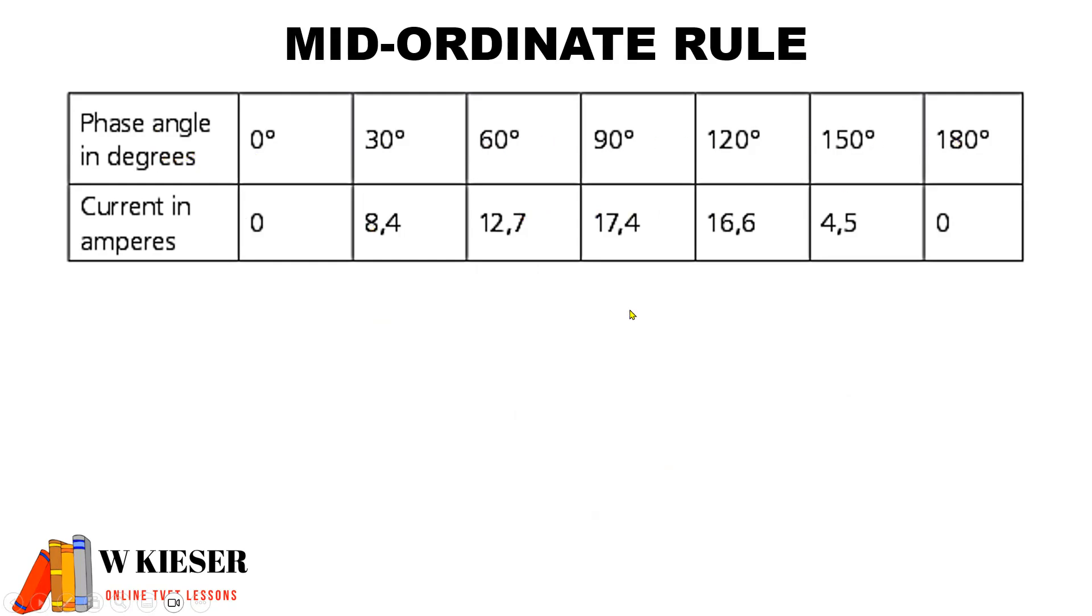Now the easiest way to find the mid-ordinate values is to take the values going from left to right, adding them together and dividing by two.